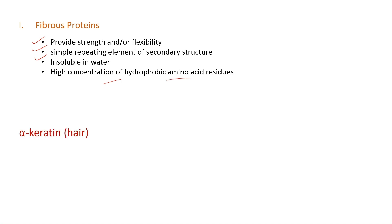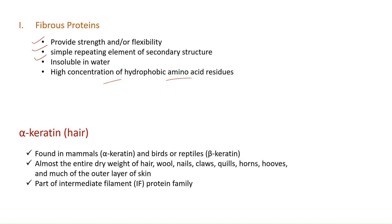Under fibrous proteins, we'll understand tertiary structure by taking the example of alpha keratin, specifically of hair. Alpha keratin is found in mammals; there is also beta keratin found in birds and reptiles. Keratins constitute the entire dry weight of hair, wool, nails, claws, and the outer layer of the skin. Alpha keratin is a member of the intermediate filament protein family.